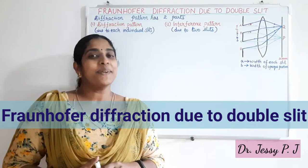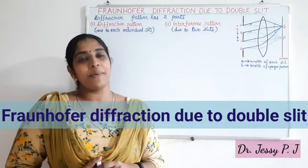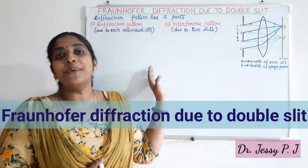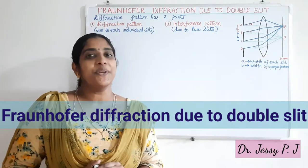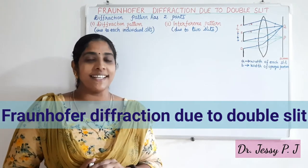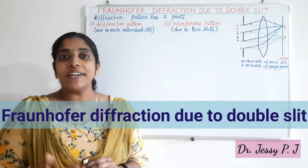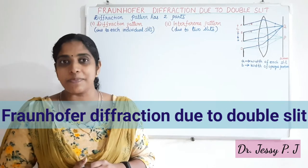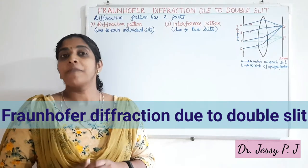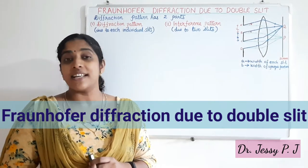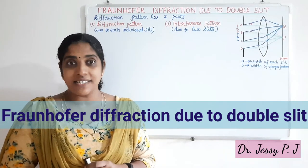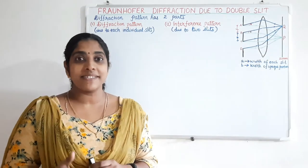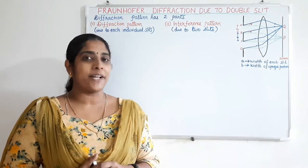Hi y'all, today we can discuss Fraunhofer diffraction due to double slit. In the last video we have seen Fraunhofer diffraction at a single slit. We found various expressions for path difference, phase difference, resultant intensity, conditions for center maximum, secondary maximum, minimum, etc.